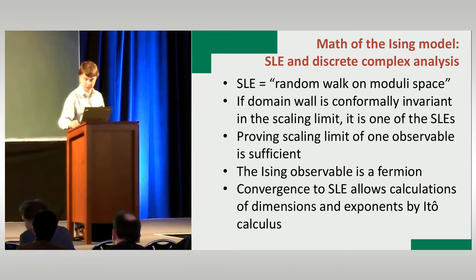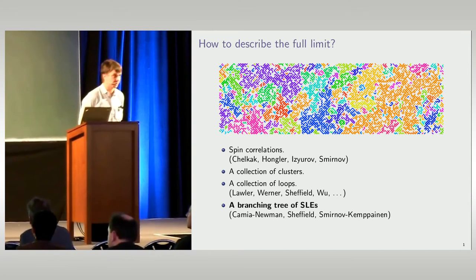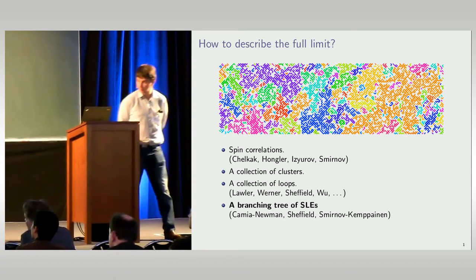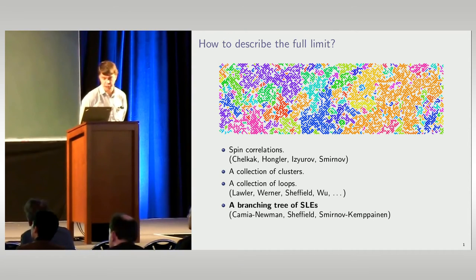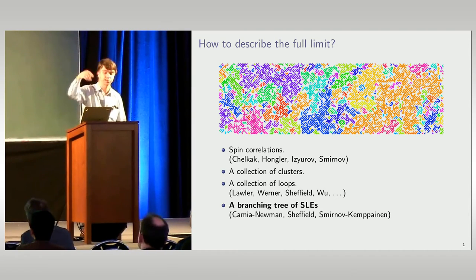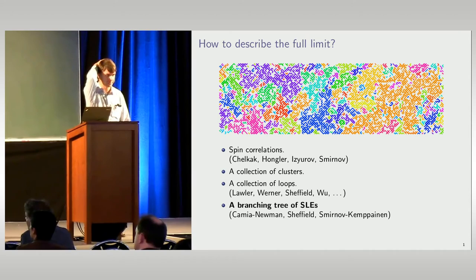Now I'll talk about some very new work — the question of how to describe the full limit. Here, for example, is the FK model where clusters are painted in different colors. One can study spin correlations in the Ising model — there was work by Chelkak and Smirnov showing that in a domain everything converges to what is predicted, and this was recently finished by Chelkak and Smirnov. One can study collections of clusters, collections of loops (perimeters of clusters). There is a big activity by Viklund, Werner, Sheffield, Hauwu, and others. What was also suggested is to do branching trees of SLEs for these loops.